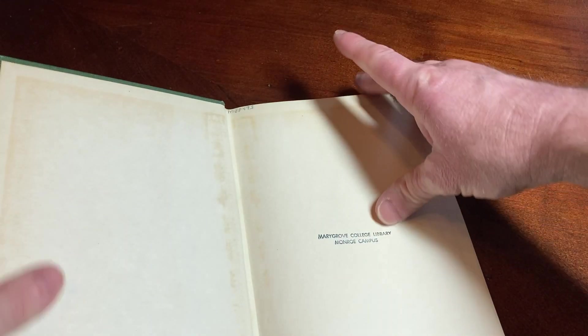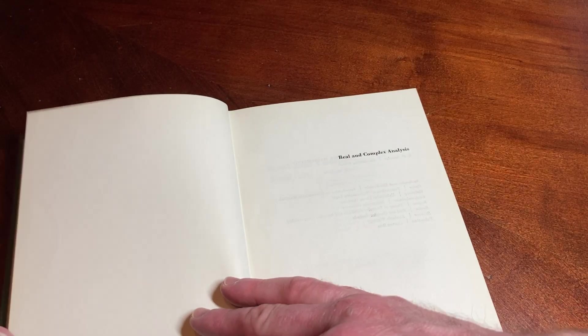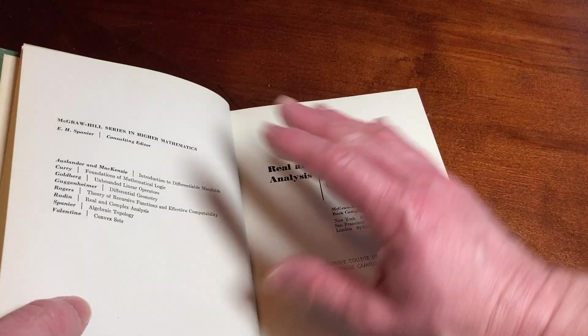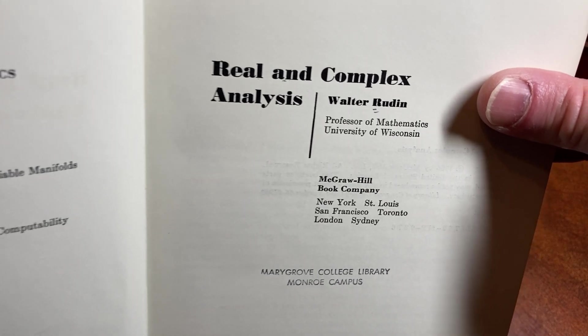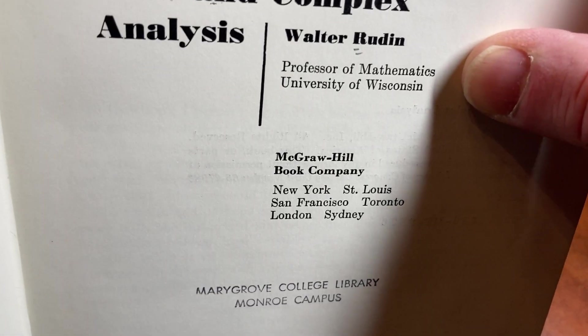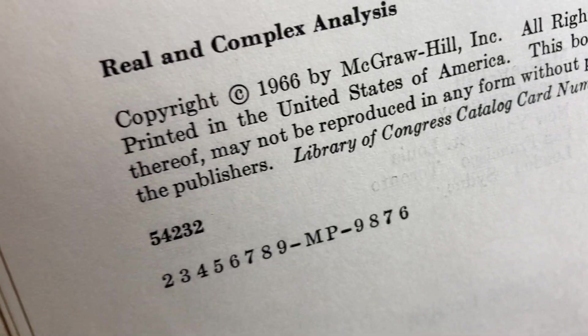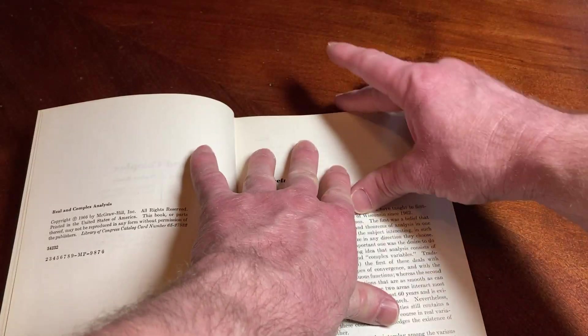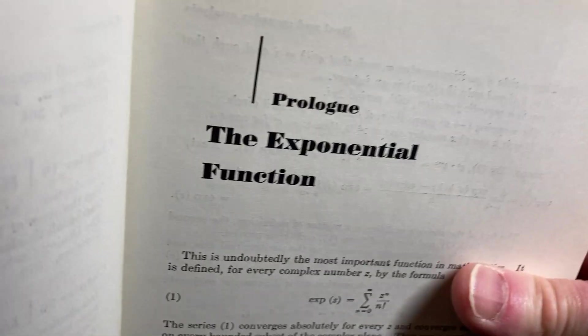Definitely the most famous. I want to show you one thing. Here it is: Real and Complex Analysis by Walter Rudin, Professor of Mathematics, University of Wisconsin. Here's the copyright 1966. We're gonna come back and read the preface in a minute.